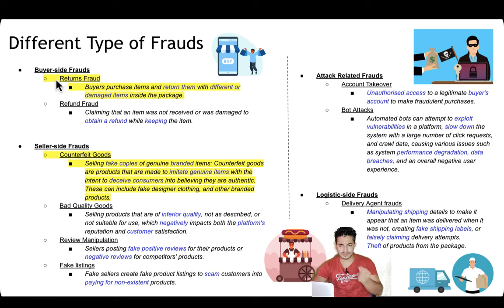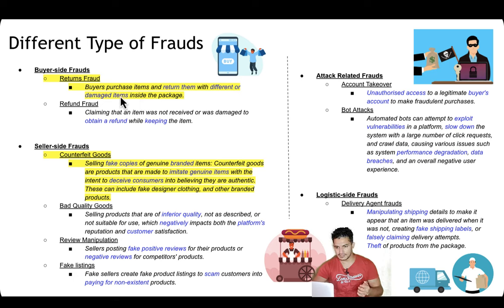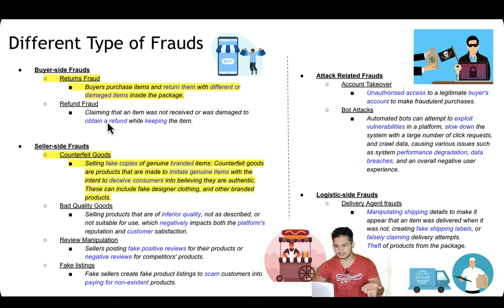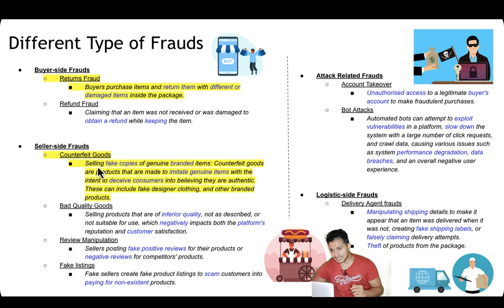There are several types of fraud. The first is buyer-side fraud. Return fraud: a buyer purchases items and returns them with different or damaged items inside the package. Refund fraud is different — the buyer may claim that an item was not received or was damaged to obtain a refund while keeping the item. So in return fraud they return damaged or different items, while in refund fraud they take the refund but don't give back the items and end up keeping them.